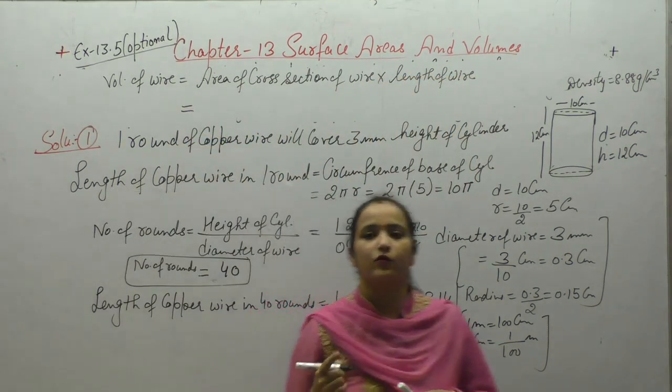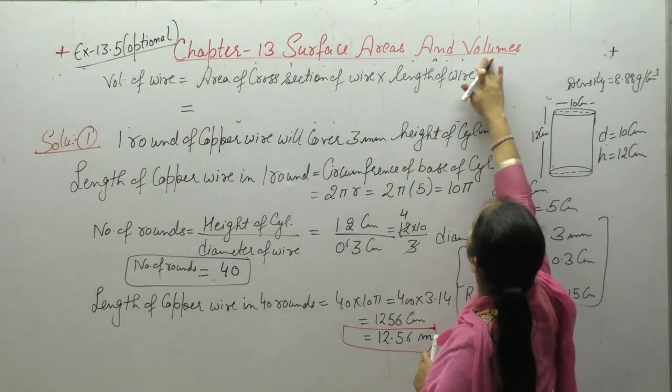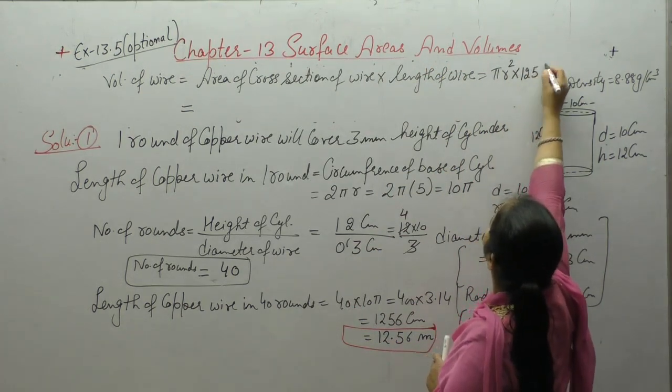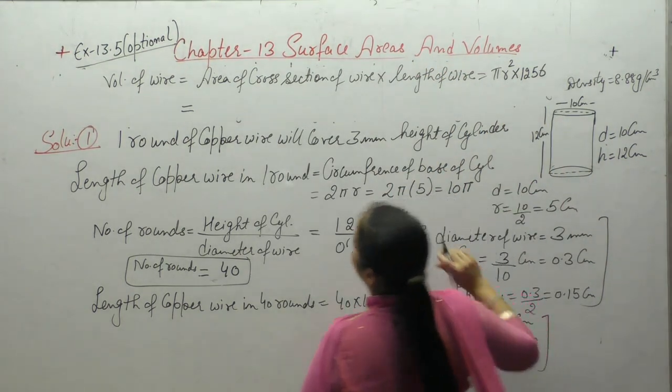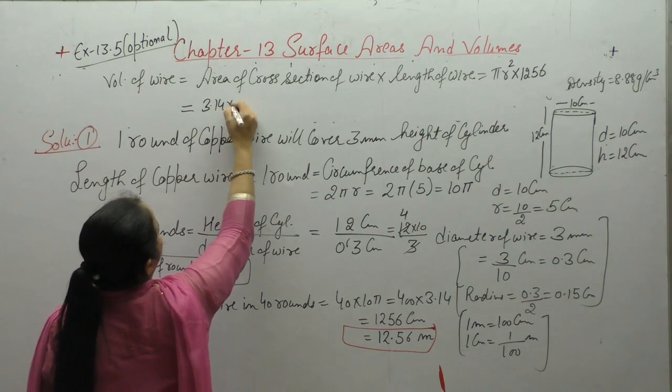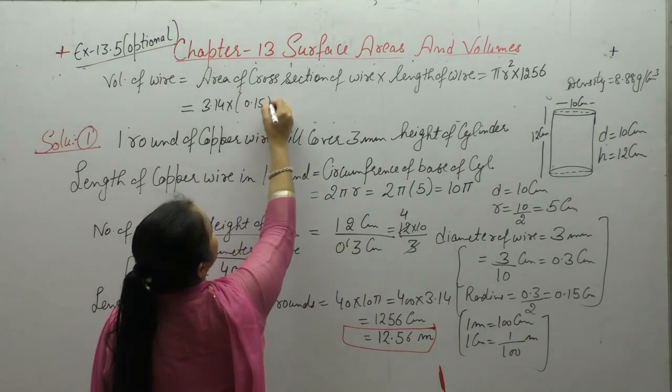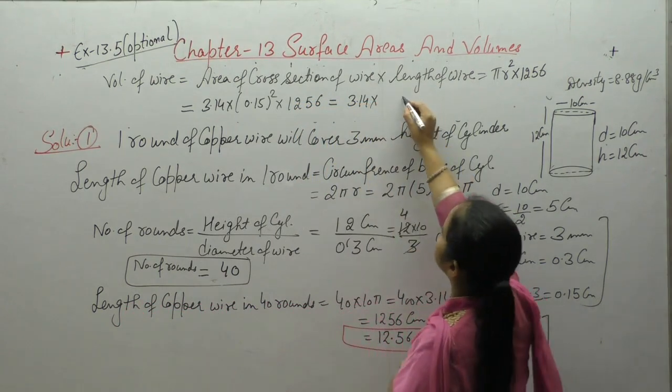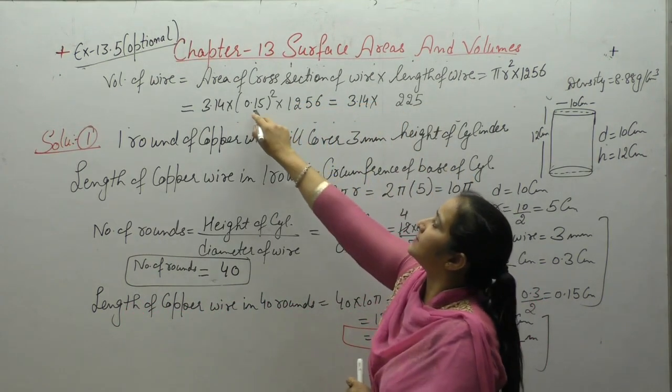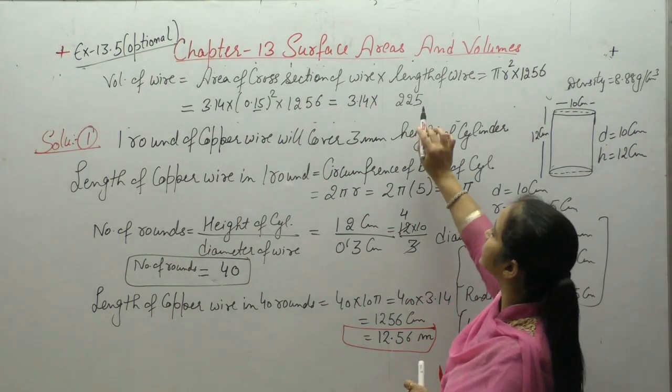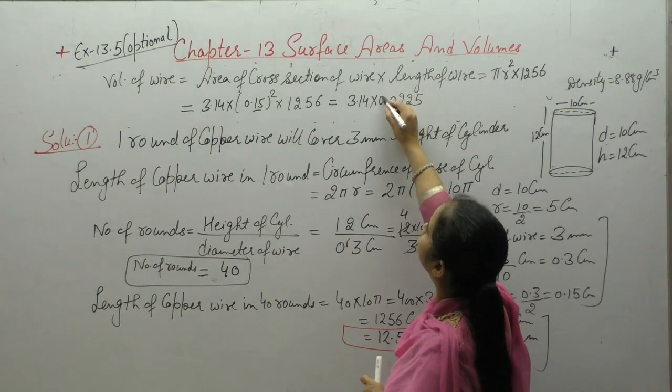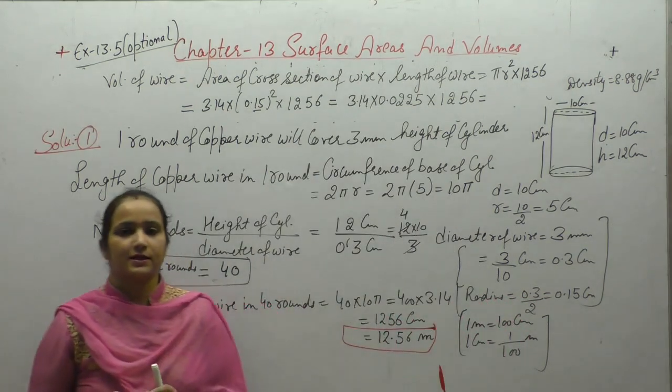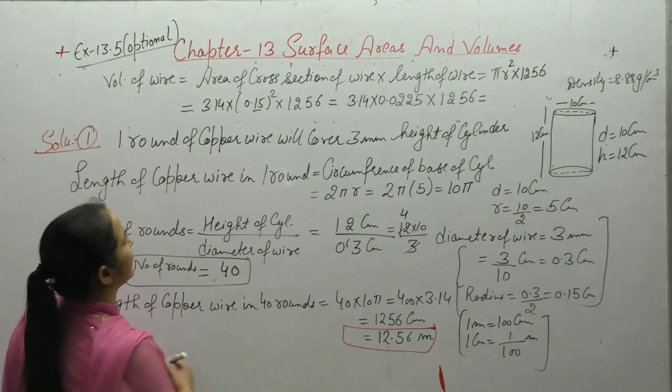The area - the base is circular, so area formula will be πr². And length we have just found: 1256cm. π value is 3.14, radius of wire we found. Multiply by 1256. We will solve this and we get 88.736 cm³.